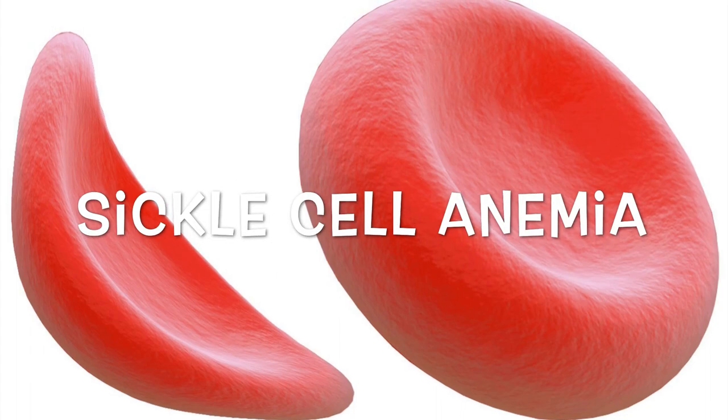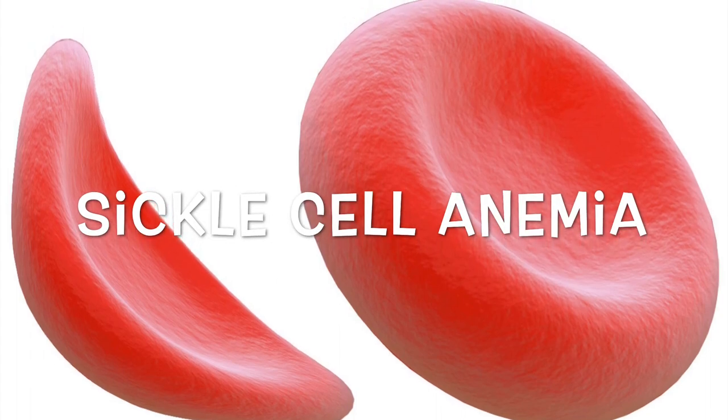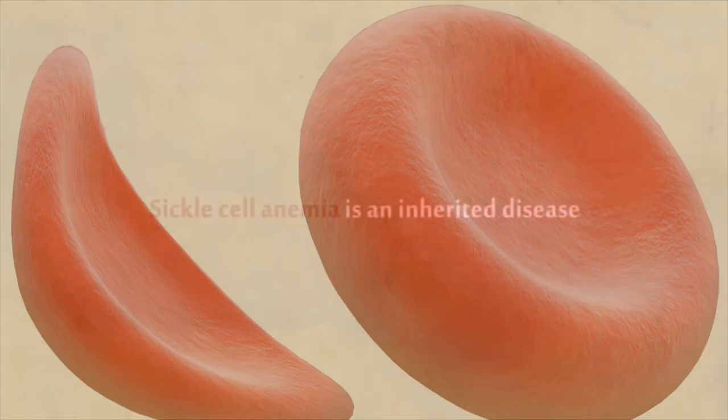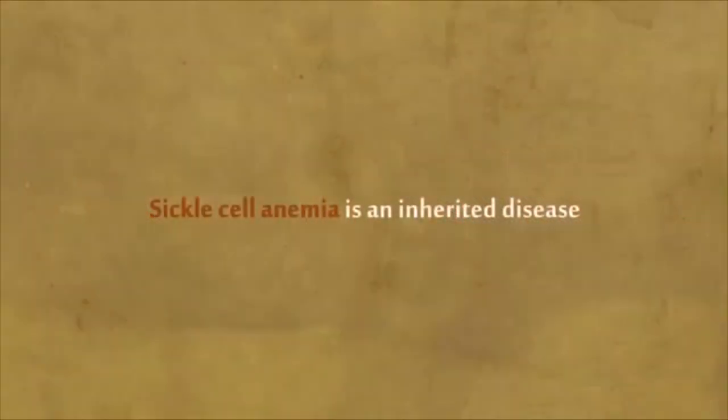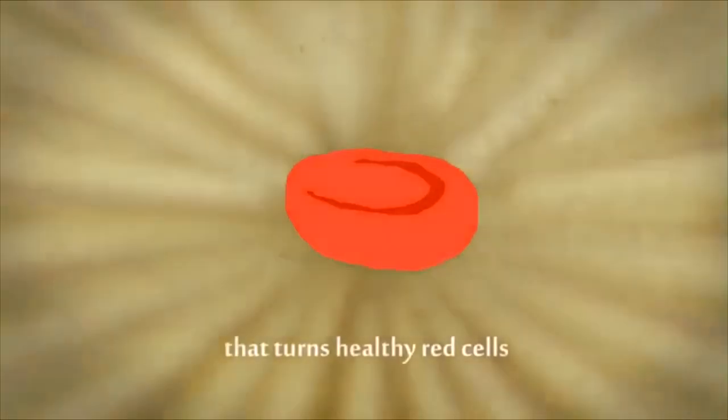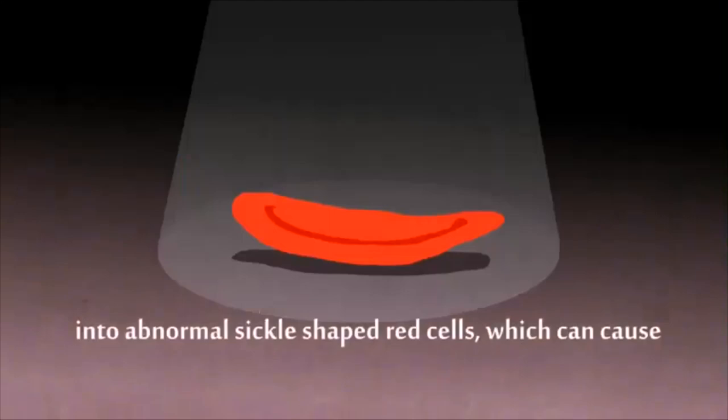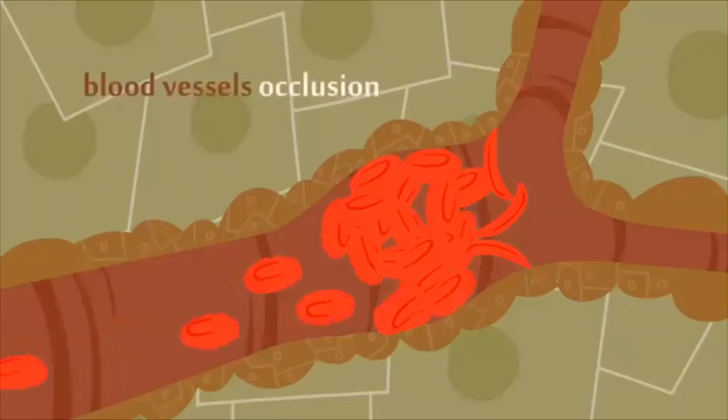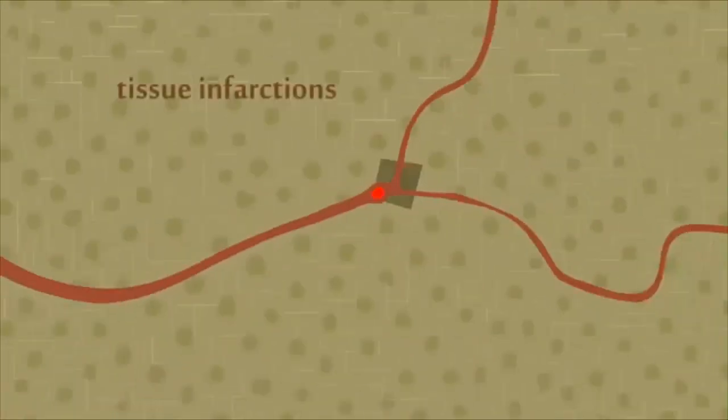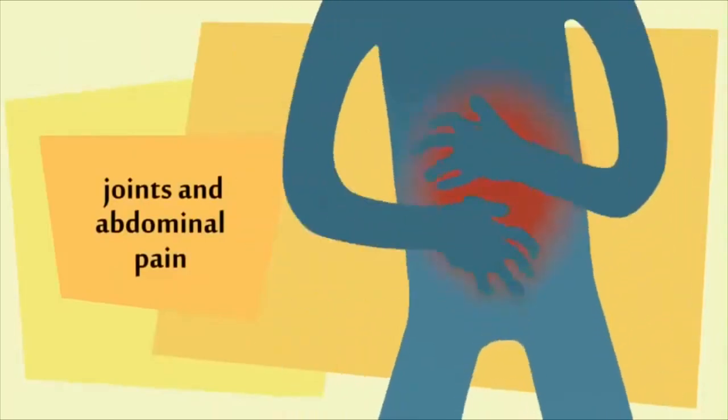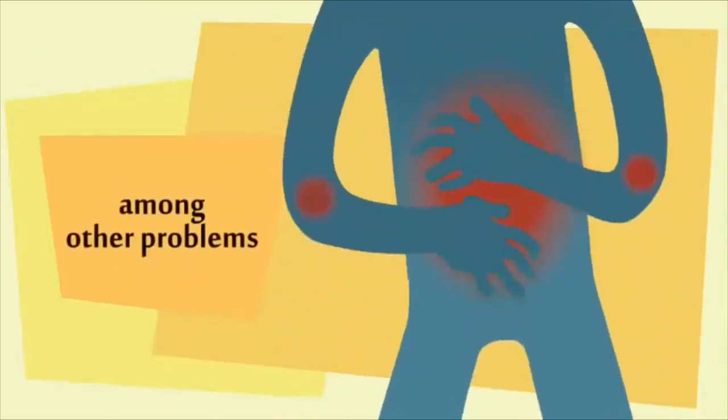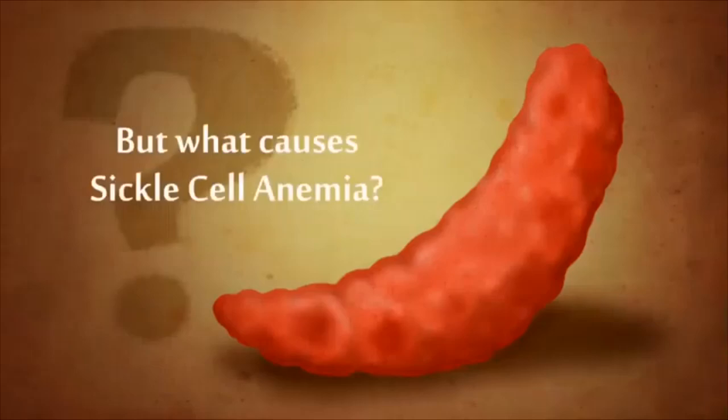We are going to see the complete story of sickle cell anemia today. Sickle cell anemia is an inherited disease of the RBC which turns a healthy looking bi-concave RBC into abnormal sickle-shaped RBC which can cause blood vessel occlusion due to their gluing nature, leading to tissue infarction. Tissue infarction can cause pain, swelling, and many other symptoms. Let's see what causes sickle cell anemia.